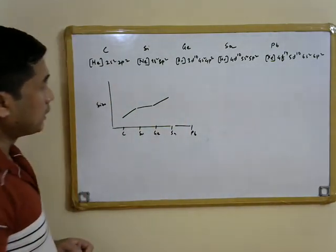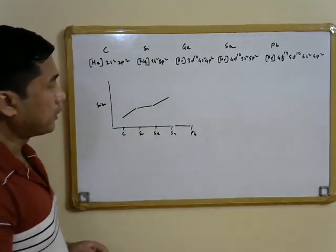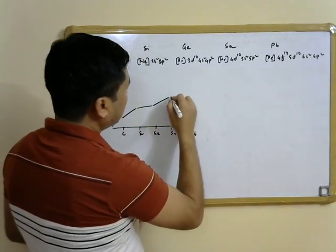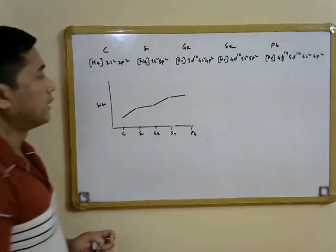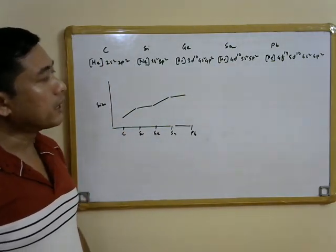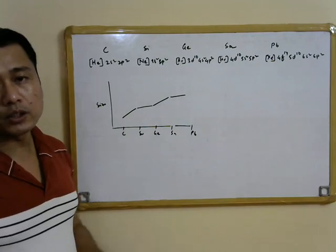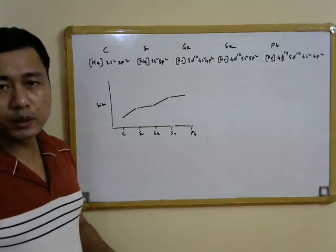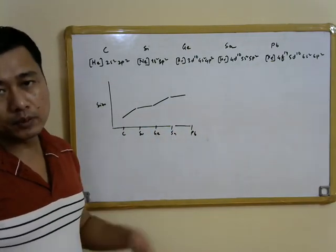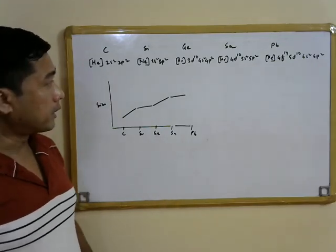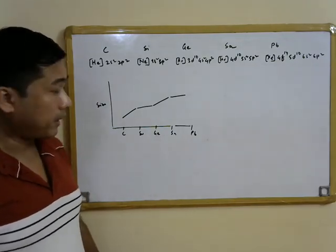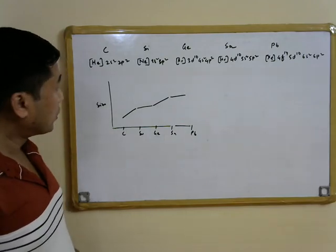Going from germanium to tin there is again an increase in atomic size, but from tin to lead the increase is not very substantial because 14 f-electrons are added, which shield nuclear charge even more poorly than d, s, or p electrons.